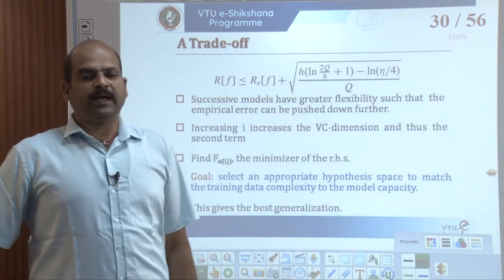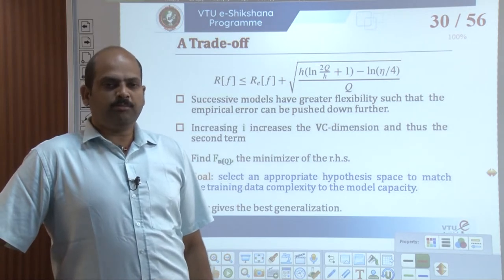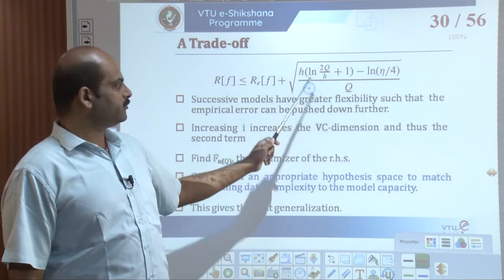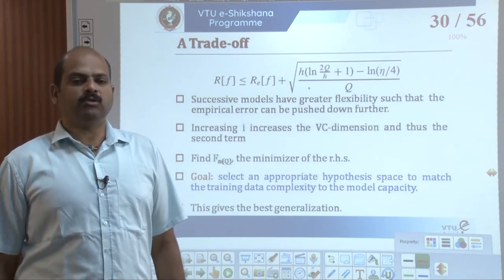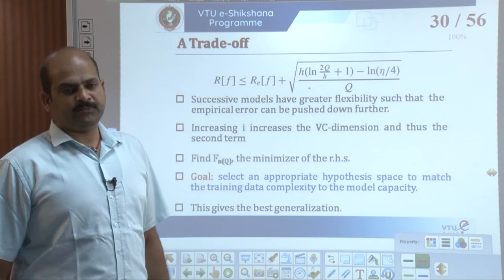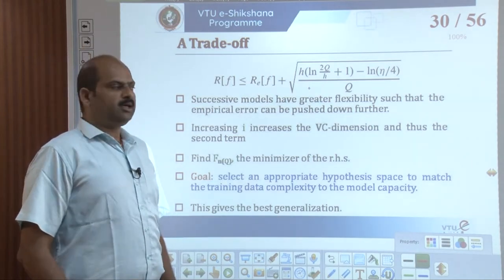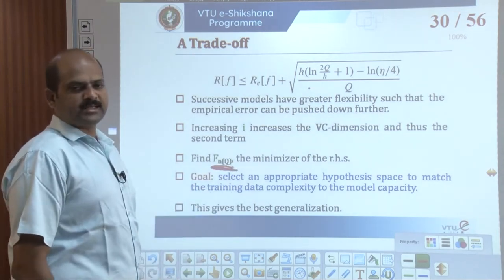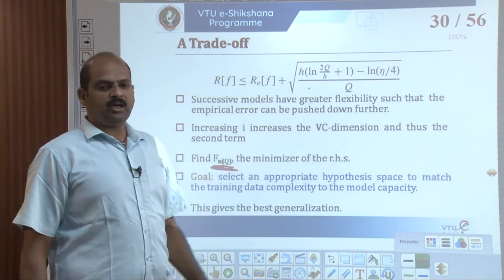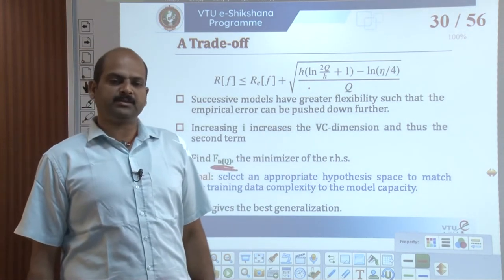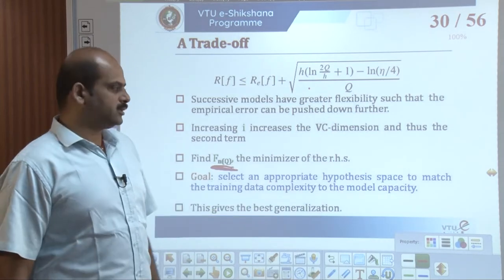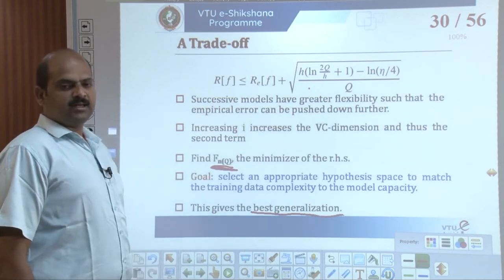The successive models have greater flexibility such that the empirical error, which is the first term in the equation, can be pushed down further. However, increasing the value of i increases the VC dimension, which in turn increases the second term. The issue is to find the element FN(Q) in the hypothesis space structure that minimizes the right-hand side of the equation. The goal is to set an appropriate hypothesis space to match the training data complexity to the model capacity, which gives the best generalization.